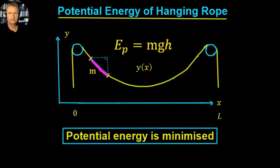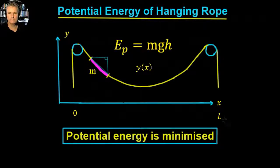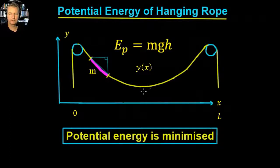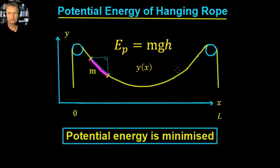Let's look at the gravitational potential energy of a hanging rope. I've drawn the rope here in yellow, hanging over a couple of pulleys. The pulley here is at point zero and this pulley here is at point L. The rope hangs in a particular arc such that it minimizes the gravitational potential energy. We know the gravitational potential energy is given by mgh, but we need to find an equation which defines the gravitational potential energy of this hanging rope.